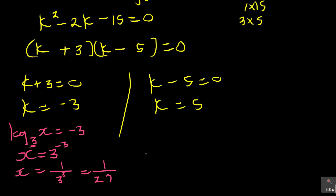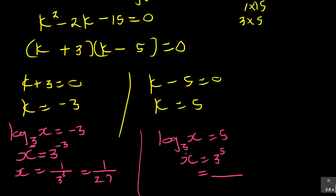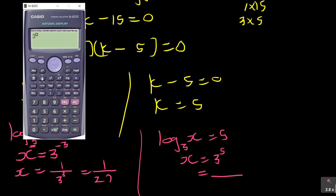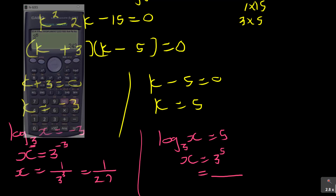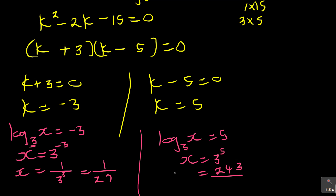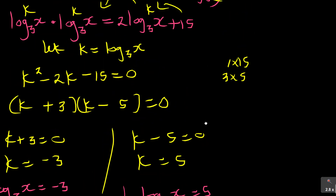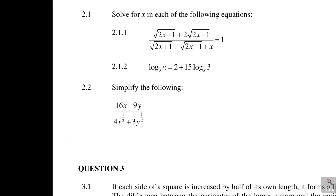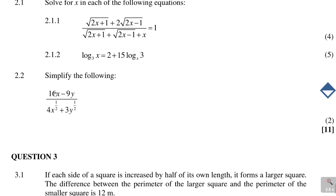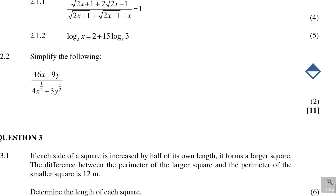For k = 5: log₃(x) = 5, so x = 3⁵ = 243. Our two solutions are x = 1/27 or x = 243. Remember to test these answers by substituting back into the original equation — the left-hand side must balance the right-hand side. That gives you 5 marks.